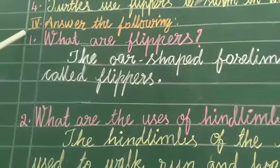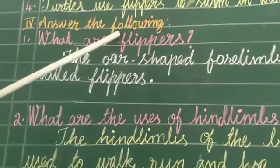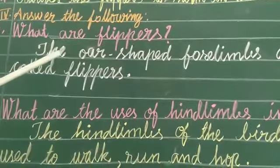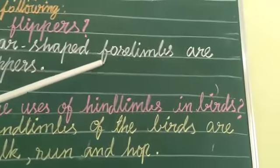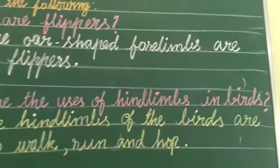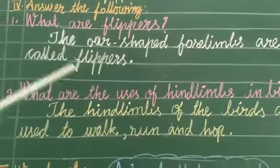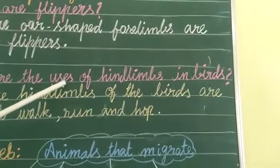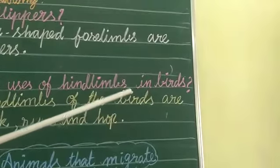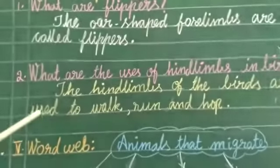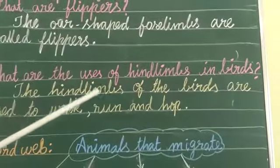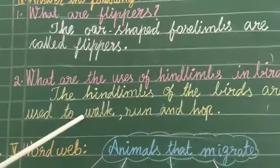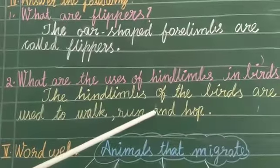Fourth Roman: Answer the following. What are flippers? The horse's four limbs are called flippers. The second question is: what are the uses of hind limbs in birds? The hind limbs of birds are used to walk, run, and hop.